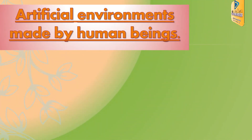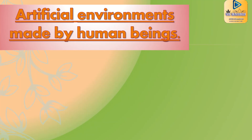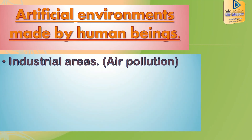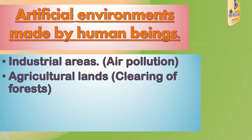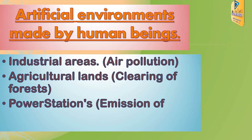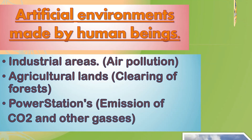First, we should understand the impacts of artificial environments made by human beings. Industrial areas are doing air pollution; to do agriculture, we are doing deforestation. Power stations are emitting carbon dioxide and other gases.